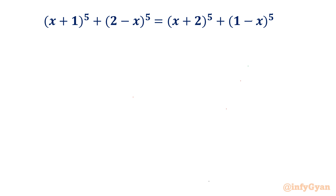Welcome back to Infigyan friends. Today in this video we are going to take up one very interesting and challenging algebraic equation. The equation is: (x + 1)^5 + (2 - x)^5 = (x + 2)^5 + (1 - x)^5. We have to find out all possible solutions.